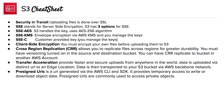Cross-region replication allows you to replicate files across regions for greater durability. You must have versioning turned on in both the source and destination bucket in order to use cross-region replication. You can also replicate a source bucket to a bucket in another AWS account.